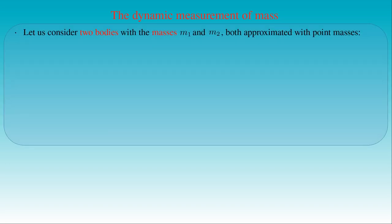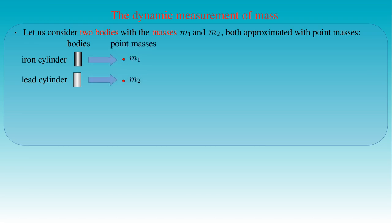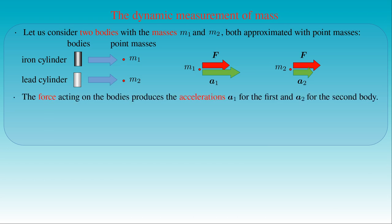Newton's second law of motion allowed us to introduce the concept of mass or inertial mass, which is a fundamental property of bodies in nature. There are many different methods to measure the mass of bodies, and we will first discuss the dynamic measurement of mass. Let us consider two bodies with masses M1 and M2 — for example, an iron cylinder with mass M1 and a lead cylinder with mass M2, approximated with point masses in motion. The second law tells us that if force F is applied to both point masses, the same force produces accelerations A1 and A2 on the bodies. Since the force acting on the point masses is the same, A1 and A2 point in the same direction and only their magnitudes differ.